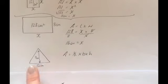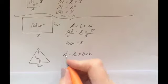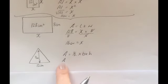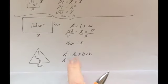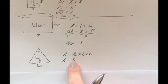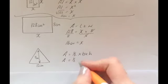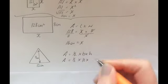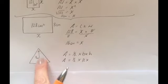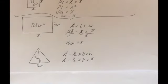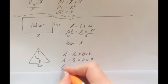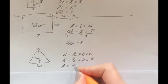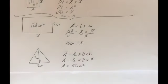Write it out in full as soon as you've identified the shape and that we're looking for area. We can't fill in A because that's what we're looking for. A half will always stay a half; the base of this triangle is 12 and the height is 7. So we end up with one-half times 12 times 7, which gives us 42 centimeters squared.